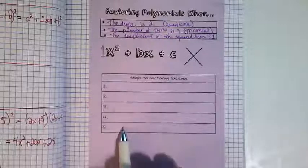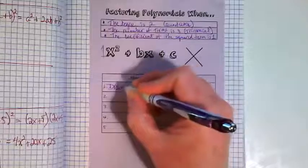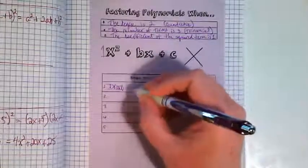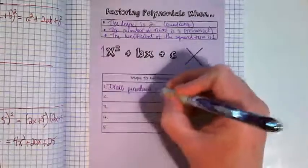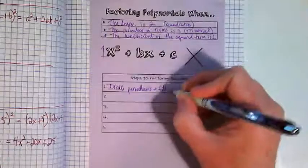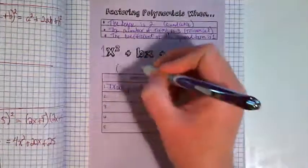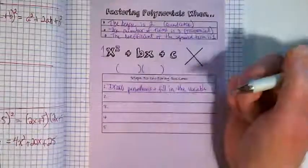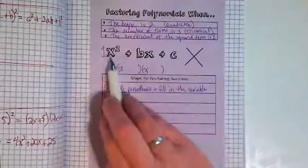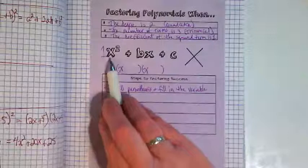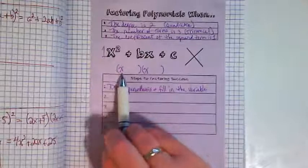So there's steps to factoring. I would like you to write down step one, which is draw parentheses and fill in with the variable. Because we are going to factor this so that we have two sets of parentheses. And the first factor pair has an x and the second has an x. Because this is an x squared, and we know x times x gives us x squared. So when we pull this apart and factor it, we're going to have an x here and an x here.